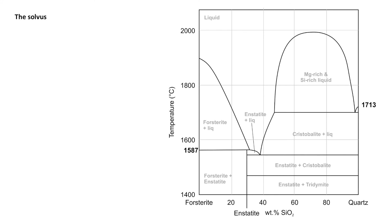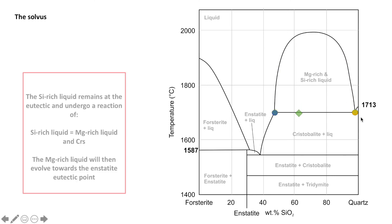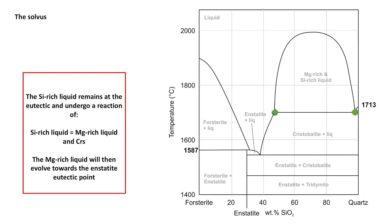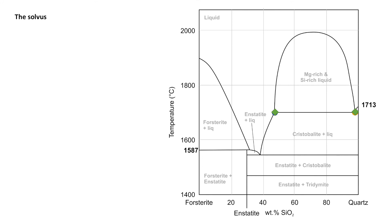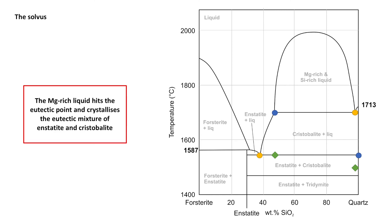Now let's tackle the solvus. Picture a system cooled until it hits the solvus, at which point an originally homogeneous mixture splits into a magnesium-rich liquid to the left and a silica-rich liquid to the right. The silica-rich liquid hits the eutectic point and undergoes the reaction: silica-rich liquid equals magnesium-rich liquid plus cristobalite. The magnesium-rich liquid then evolves toward the enstatite eutectic point, crystallizing cristobalite along the way, and eventually reaches the eutectic to crystallize a eutectic mixture of enstatite and cristobalite.